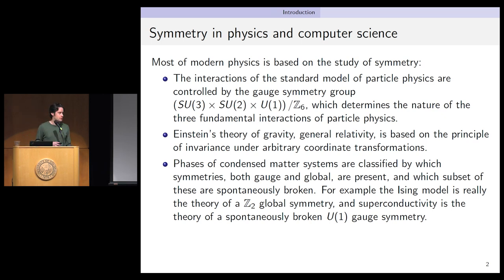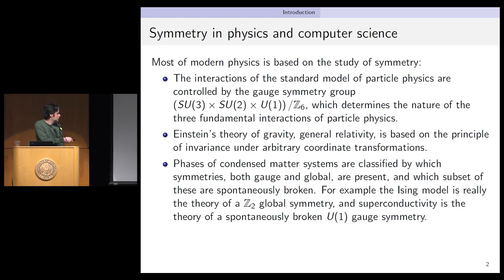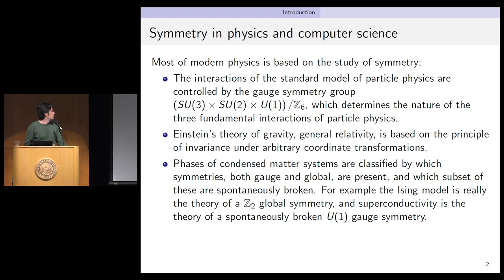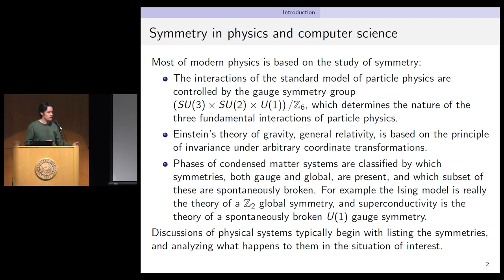Also in condensed matter physics, when we study the phases of many-body systems, to a large extent we distinguish them by their symmetry structure — what gauge symmetry and global symmetry is present, and what subset of these are spontaneously broken. For example, if you think long enough about the Ising model, you decide it's really just the theory of a Z2 global symmetry and whether it's broken or unbroken by the ground state. Similarly, superconductivity, though not how it was first thought about, is the theory of a spontaneously broken U(1) gauge symmetry broken to Z2. Basically, for any physical system, when you discuss it you start by listing the symmetries.